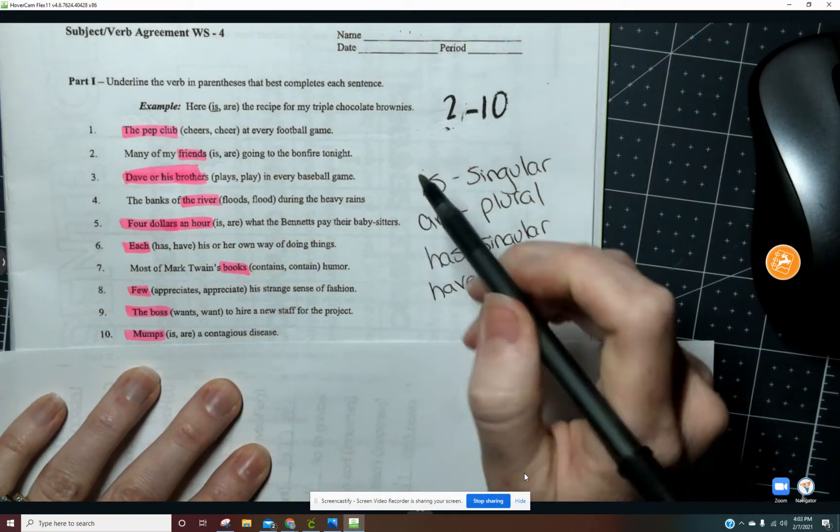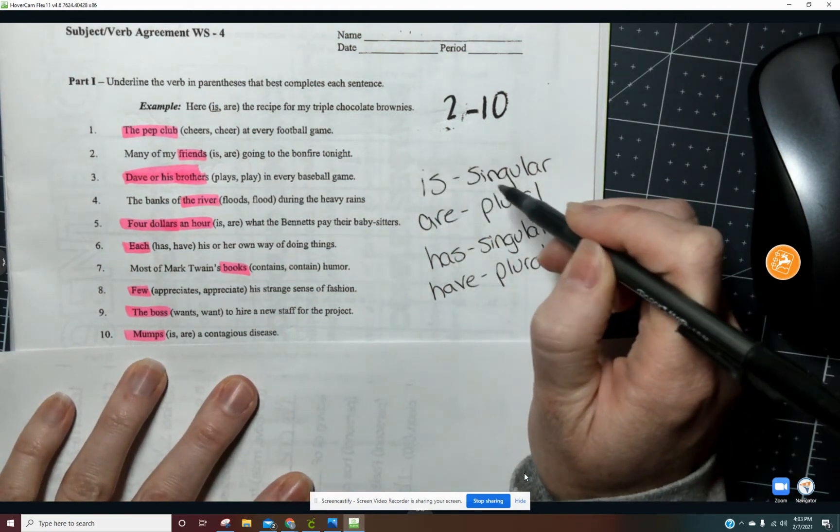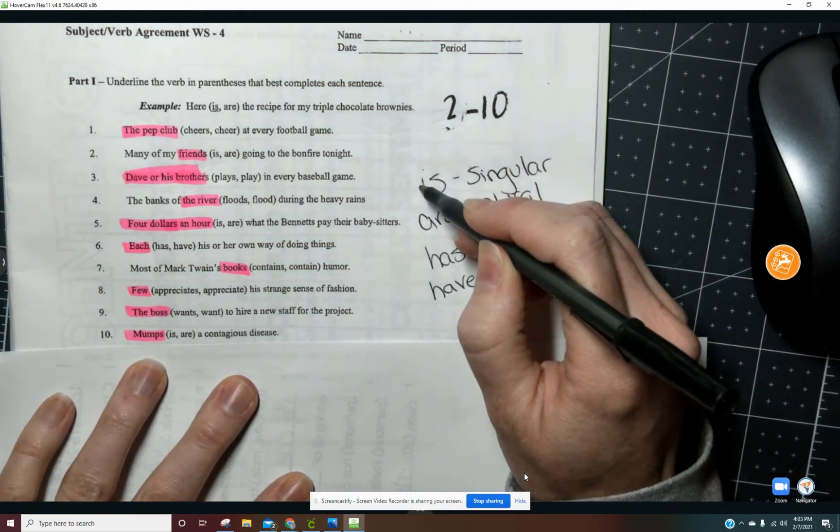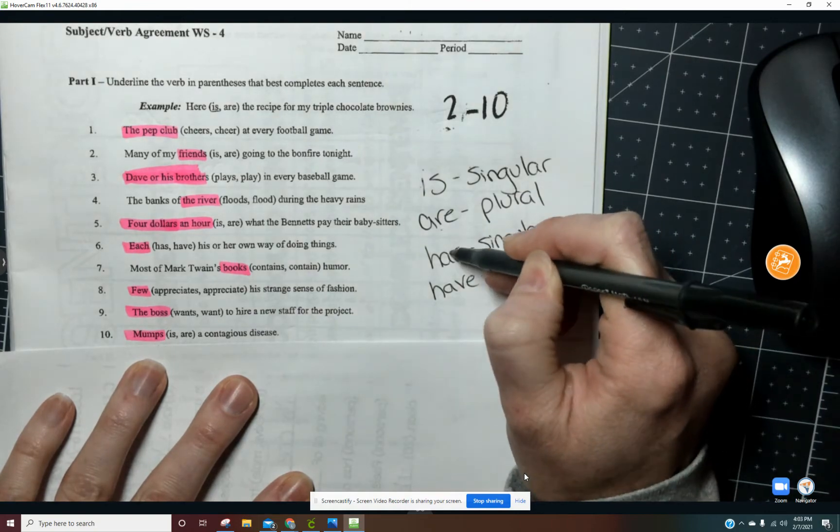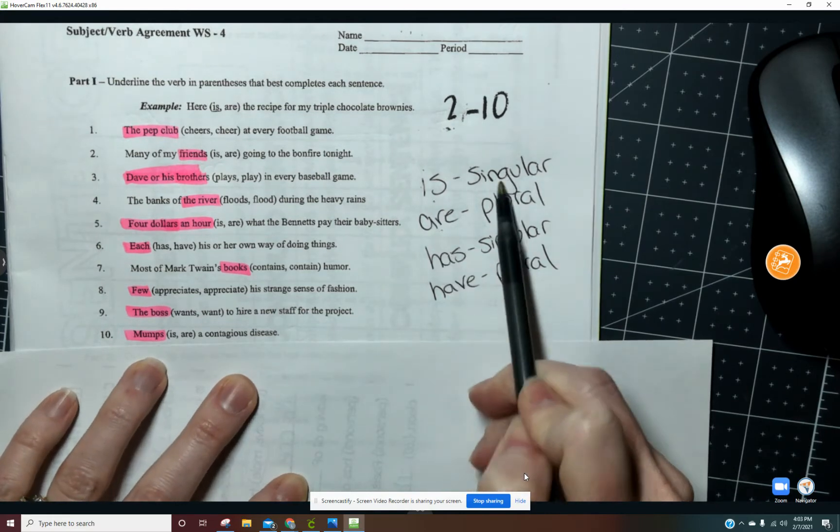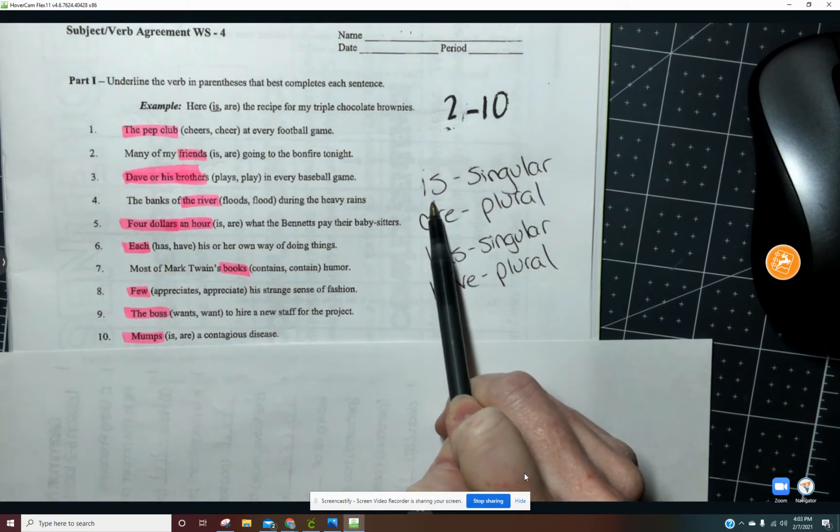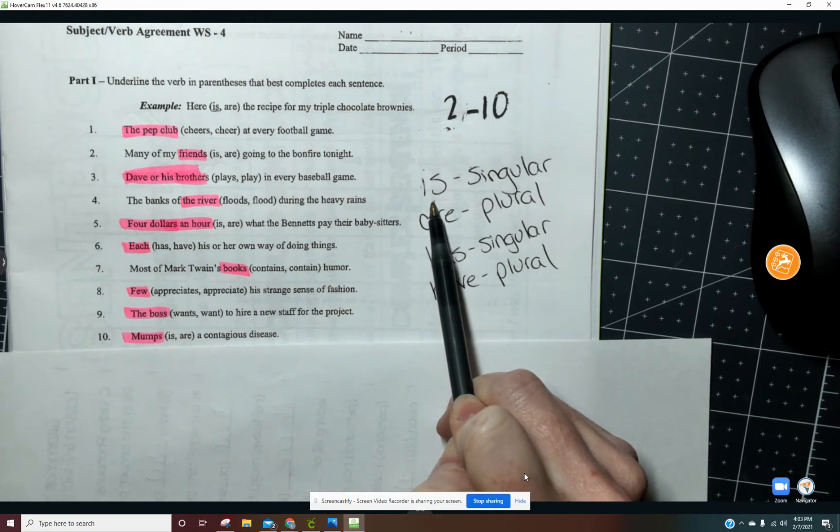Something that we did not go over in yesterday's lesson is the verbs is and are and has and have. And so the word is is singular. Are is plural. So she is, she, one person. She is awesome.